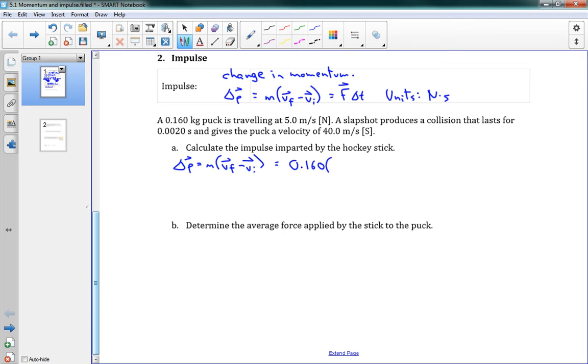And we've got the final velocity. The final velocity is 40 meter per second south. And I'm going to be subtracting 5 meters per second north. Well, if I subtract 5 meters per second north, that's the same as adding 5 meter per second south. So this gives me 0.160 times 45, which gives me a final value of 7.2 newton seconds. Newton seconds. And again this is in our south direction. So that's our impulse.